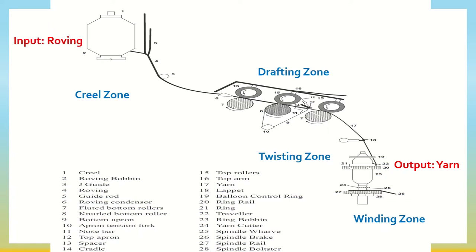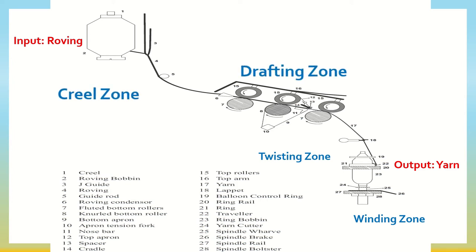Ring spinning machine converts roving into the required fineness of yarn. It includes four working zones. The first is the creel zone, where the roving is fed to the machine. After feeding, the drafting zone attenuates the roving as per the requirement. The common 3-over-3 roller drafting system is used, in which the middle roller is always apron-mounted to help smooth guidance of the fiber.